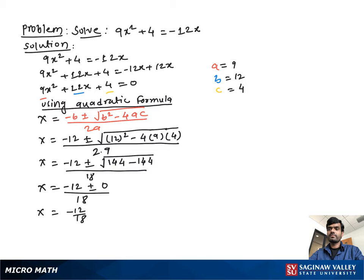If we divide 12 and 18 by 6, we get x = -2/3. This is our final answer.